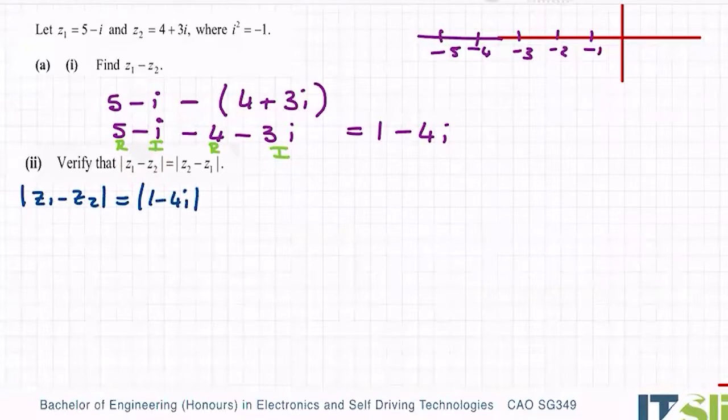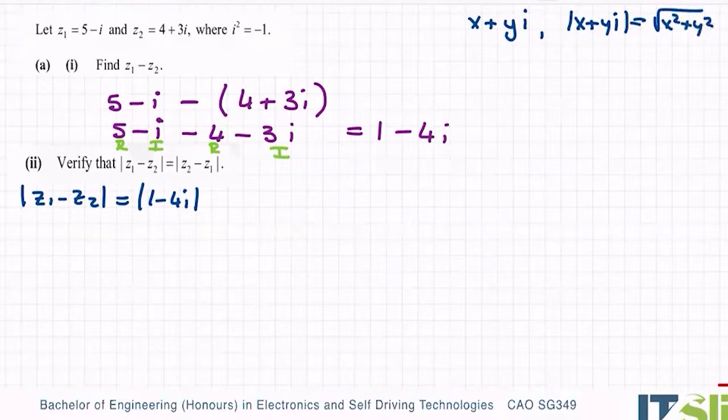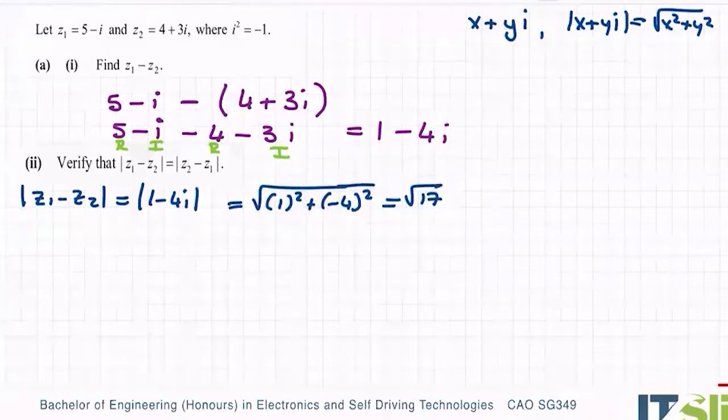And remember what modulus is. If you have a complex number x plus yi, then the modulus of x plus yi is the square root of x squared plus y squared. That's the formula you use. So therefore, if I have to get the modulus of 1 minus 4i, that's effectively my x, this is effectively my y. So it's the square root of 1 squared plus minus 4 squared. Put that into the calculator, this would be 16 plus 1, so it's going to be root 17.